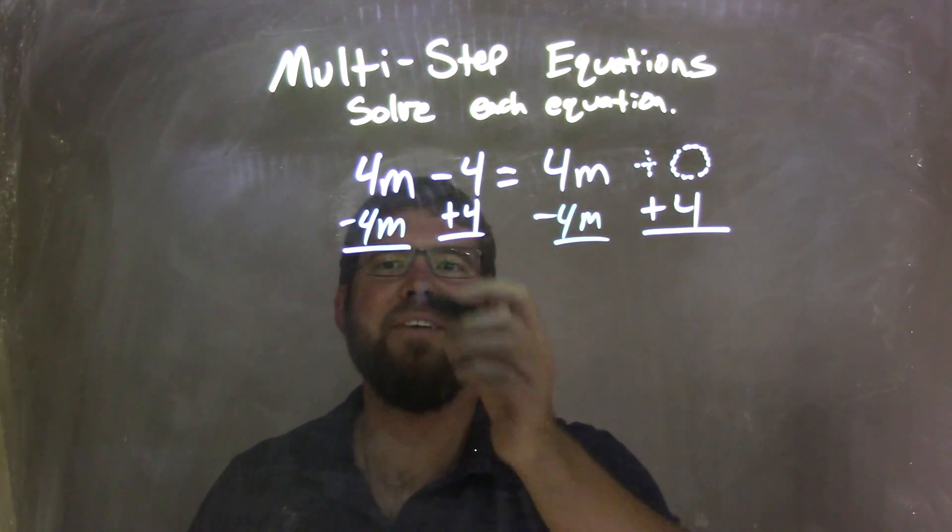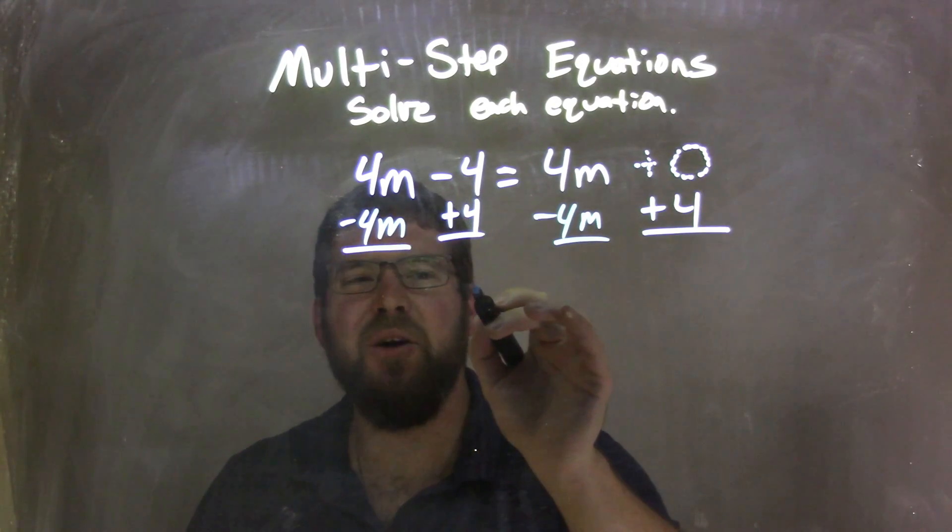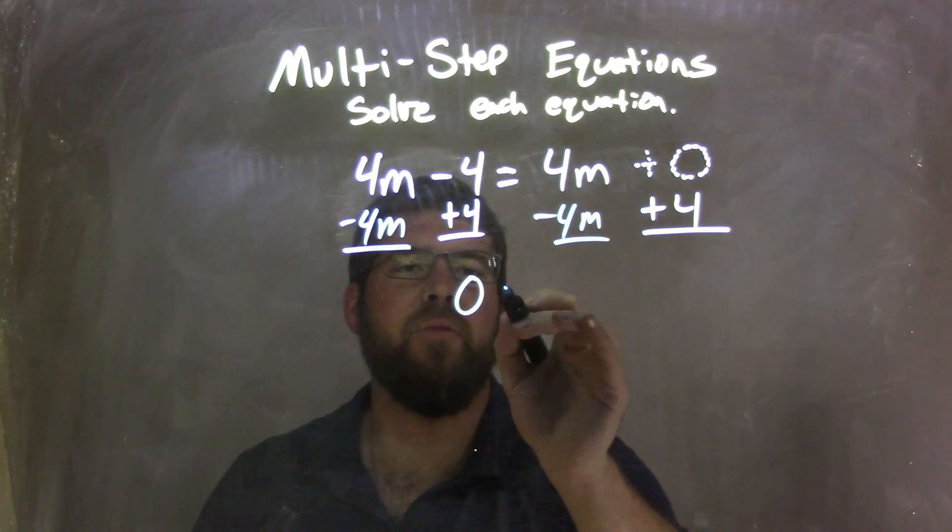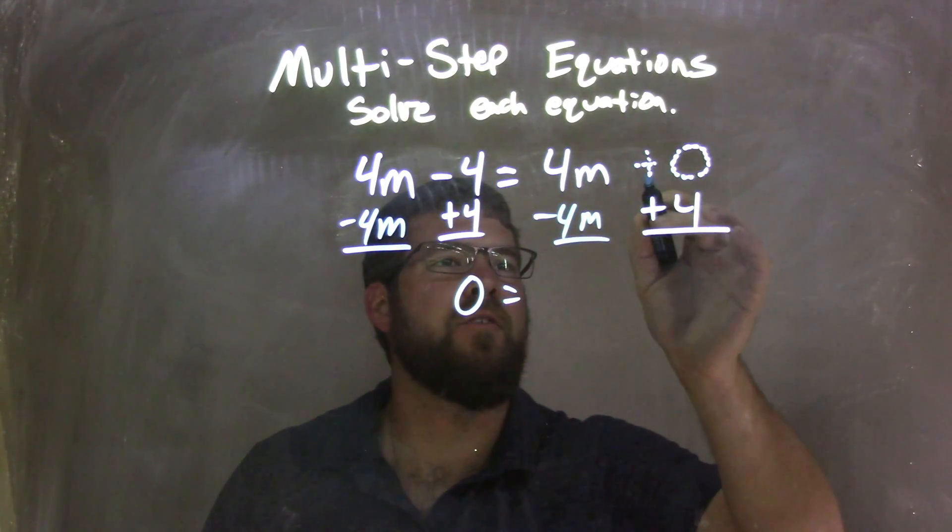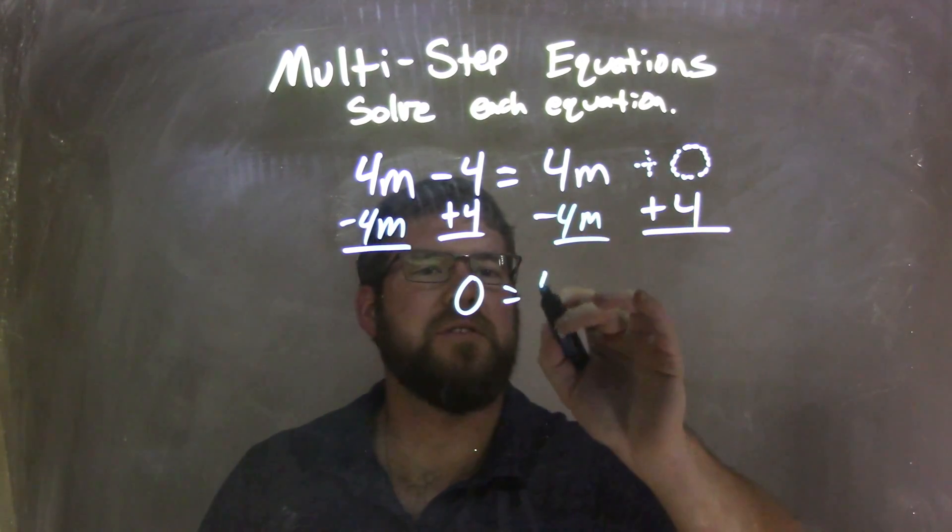Negative 4 plus 4 is 0, fantastic. 4m minus 4m, that's 0 as well, but I have to write that down because there's nothing else there. So these ended up all canceling, 4m minus 4m cancels. Now we have 0 plus 4, which is 4.